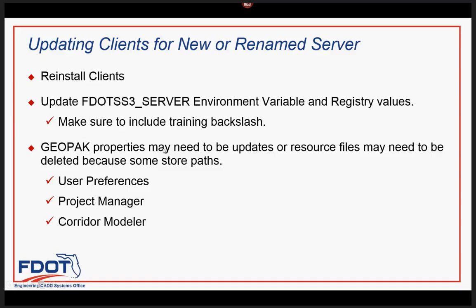Another thing to consider is that there are GeoPath properties that may need to be updated. Certain things get stored in user preferences or in Project Manager. Even some dialogs like the quarter modeler dialog can store a path to the FDOT SS3 ITL file. If that path changes, it'll show up as an error the next time users go in there, so they'll need to update some of those paths.